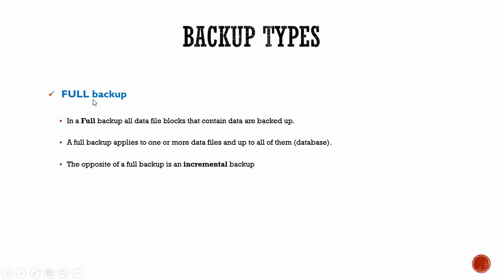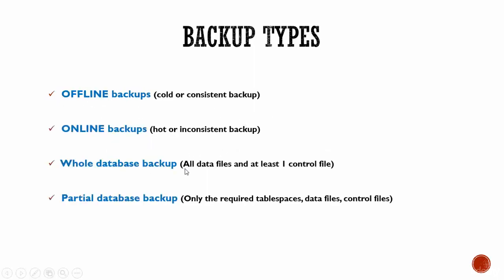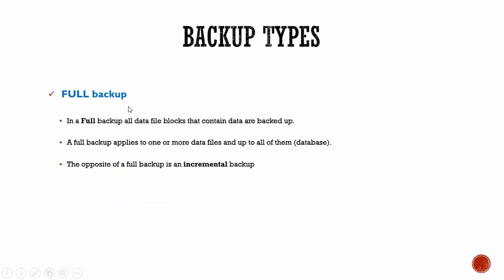Don't get confused between a full backup and a whole database backup. In a whole database backup, all the data files in the database will be backed up, and at least one control file will be backed up. Whereas in a full backup, all the data file blocks that contain the data are backed up — that can be one data file or all the data files in the database, depending on your selection.